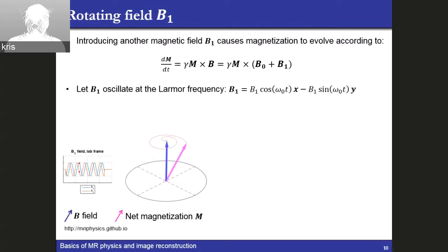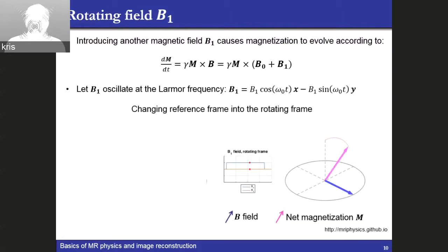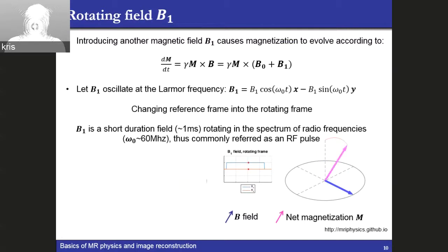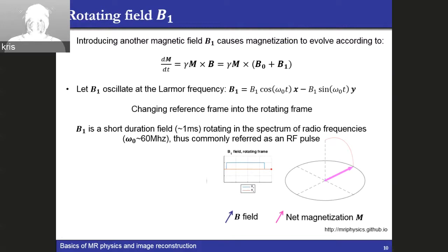If the B1 field is rotating at the Larmor frequency — the same frequency that the magnetization is oscillating — the magnetization will spiral down into the transverse plane. This is easier to see in a rotating reference frame. These B1 fields are typically very short duration, on the order of a few milliseconds. And for them to be effective, they need to be precessing at the same Larmor frequency. Since the Larmor frequency at typical values is in the range of radio frequencies, these B1 fields are commonly referred to as RF pulses.